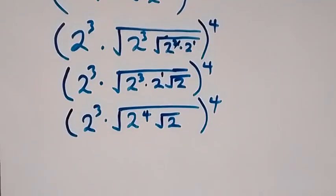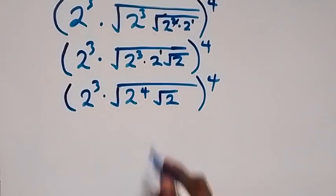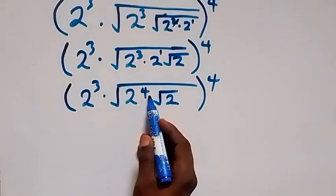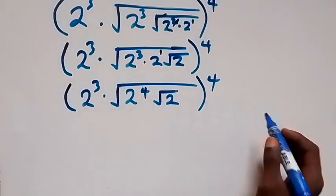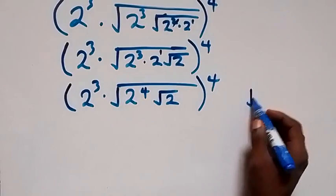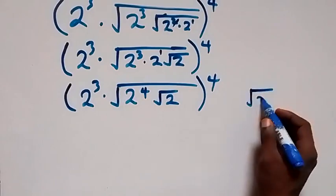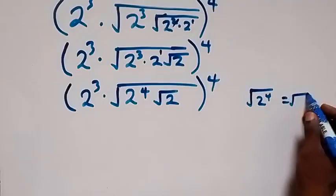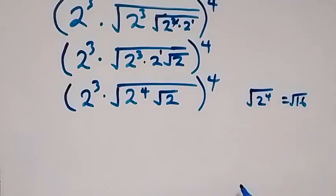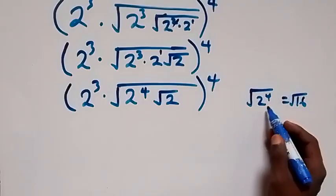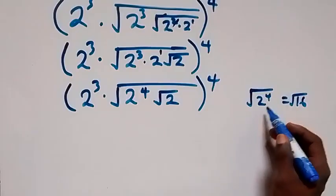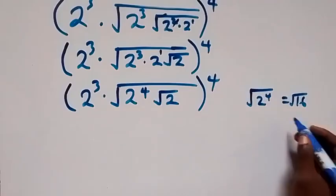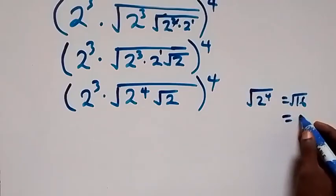Again, we can rewrite this. We have square root of two raised to power four, and that will be the square root of two raised to power four, same thing as square root of 16, because two raised to power four is two times two times two times two which is 16, and square root of 16 is four.